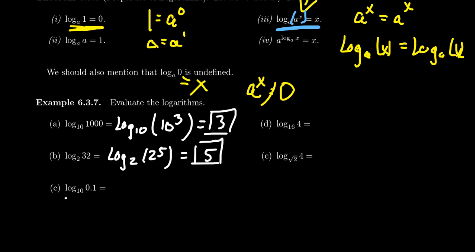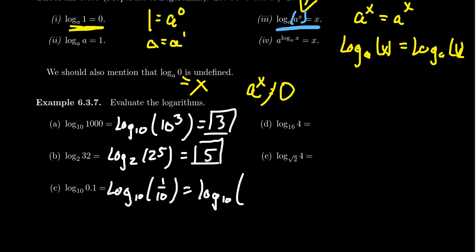Let's do another example: log base 10 of 0.1. What power of 10 gives you 0.1? It might not be obvious as a decimal, but if we switch it to a fraction, it becomes easier. Log base 10 of 1/10 — and 1 over 10 we can write as 10 to the negative 1. So what power of 10 gives you 10 to the negative 1? That equals negative 1.